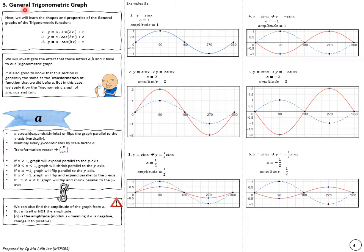Next we look at the general trigonometric graph which has the form a·sin/cos/tan(bx + c). This is exactly the same as the transformation of functions we did earlier. The parameter a affects the graph vertically. Note that a is not the amplitude itself — the amplitude is the modulus of a. So if you have minus a, that's not the amplitude; you take the positive value. For example if a equals 2, the graph scales by a factor of 2. If a is negative, the graph flips upside down.